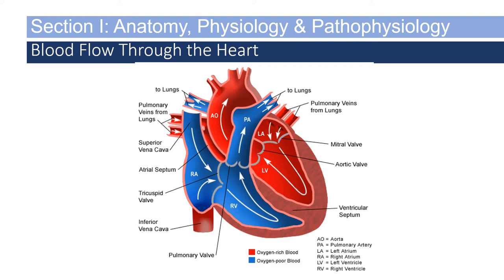Deoxygenated blood comes in via the superior and inferior vena cava into the right atrium. It is then dumped into the right ventricle and sent to the lungs via the pulmonary artery. It goes through pulmonary circulation and returns oxygenated via the pulmonary veins into the left atrium. It is dumped into the left ventricle and all that oxygenated blood is sent to the body via the aorta.